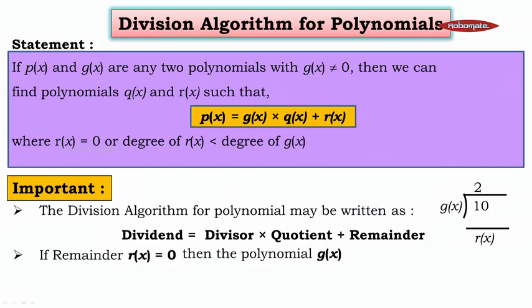If the remainder R(x) equals 0, then the polynomial G(x) is a factor of the polynomial P(x). Here G(x) is the divisor, P(x) is the dividend, Q(x) is the quotient, and R(x) is the remainder. In simple words, it is nothing but: dividend = divisor × quotient + remainder.